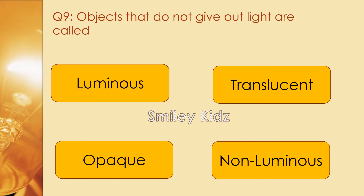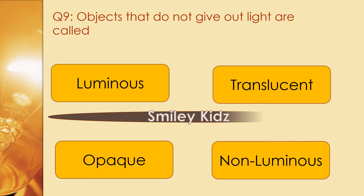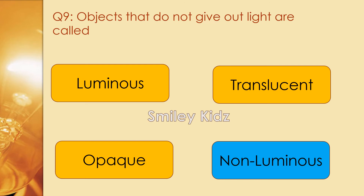Question number 9. Objects that do not give out light are called. Options are luminous, translucent, opaque, and non-luminous. The right answer is non-luminous. Objects that do not give out light are called non-luminous objects.